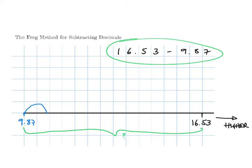The first jump I'm going to use is from 9.87 to 9.90, and that's a jump of plus 0.03 because it's from 7 hundredths up to 10 hundredths. So it's 0.03 and we end up at 9.9.